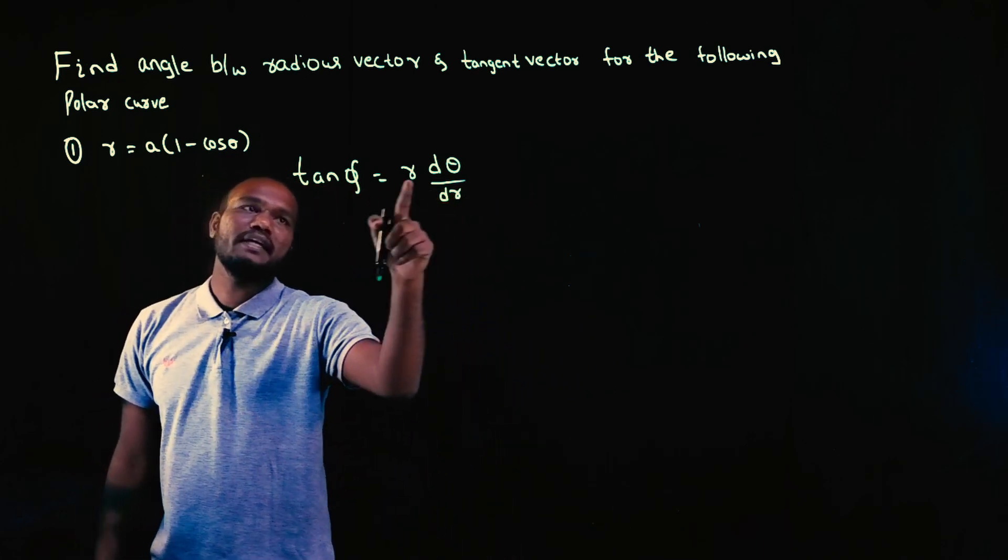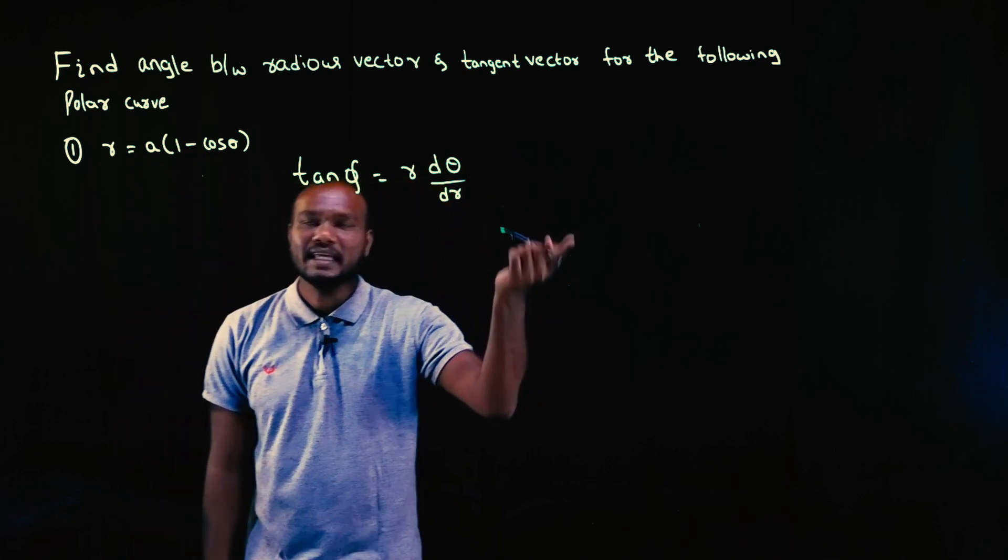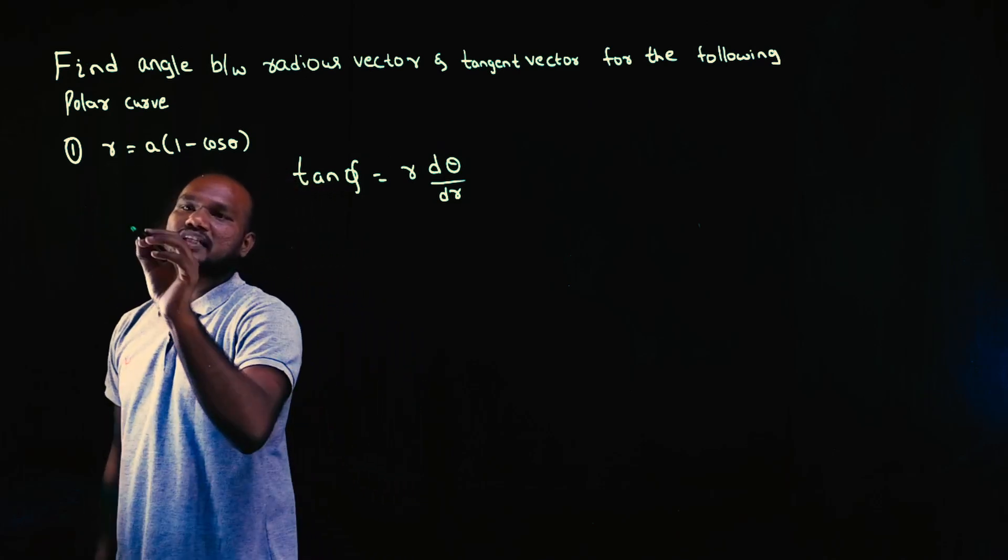So in this formula, we need r. R is given in the question. And again, we need dθ by dr. So we will find dr by dθ. So r differentiation is what? dr by dθ.